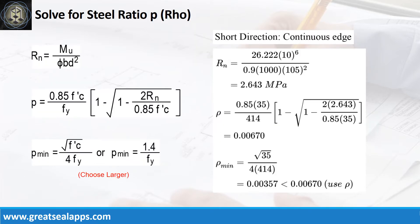Short direction, continuous edge: moment equals 26.222 kN·m/m. Resistance factor equals 0.9. b equals 1,000 mm. d equals 105 mm. The beam design ratio RN equals 2.643 MPa. Reinforcement ratio ρ equals 0.0067.